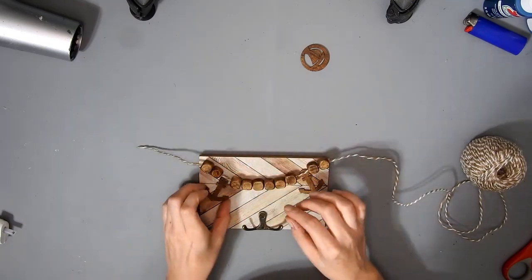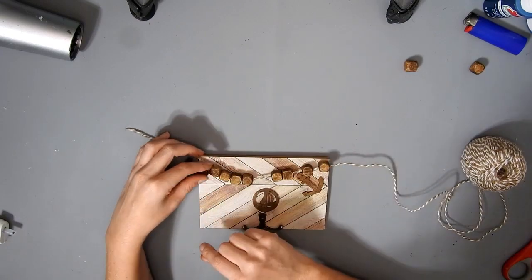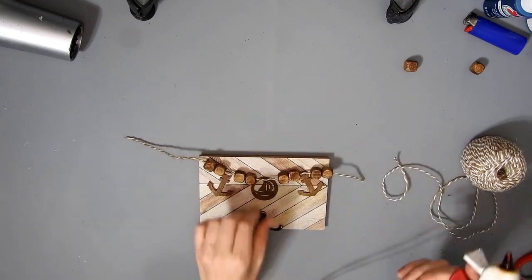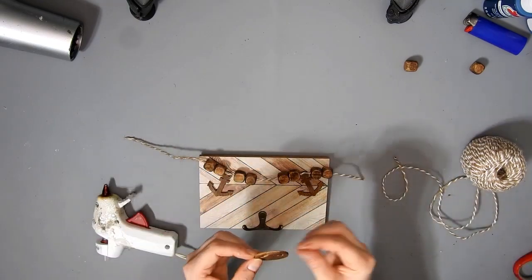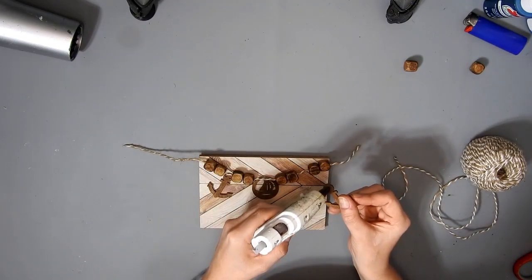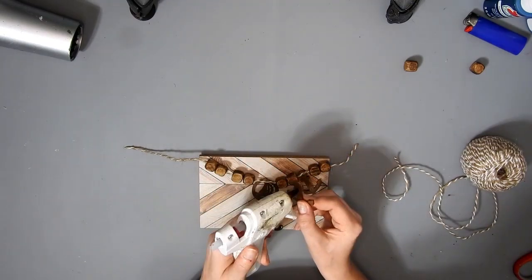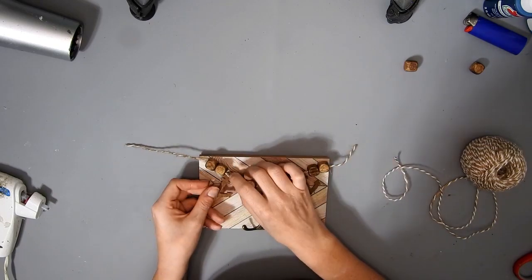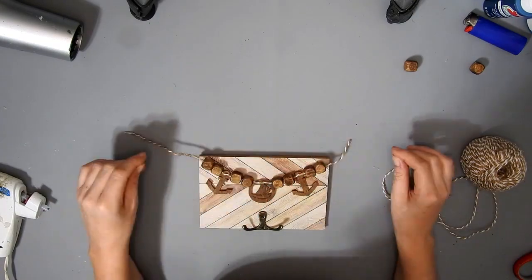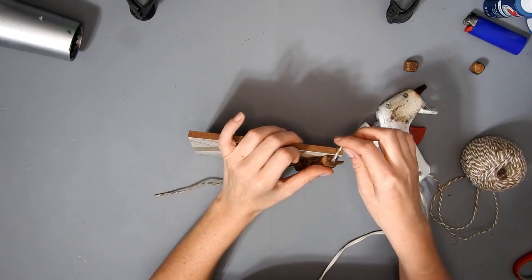I'm just going to measure out where I want the pieces to go in. But then I realized that there was too many beads, so I took two off. Then I just hot glued the boat and the anchors underneath the twine to cover up the wee holes.